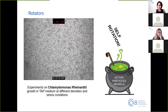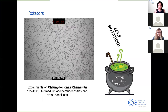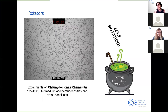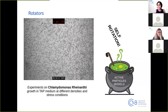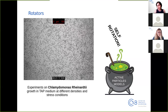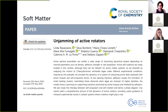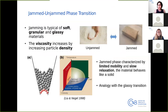To study this, we performed experiments on Chlamydomonas reinhardtii in tap medium at different phases. This is an example of a natural active rotator, motivating us to add self-rotation to active particle models. The last word of our title is 'unjamming,' because we focus on a particular phase transition: the jammed-to-unjammed phase transition.